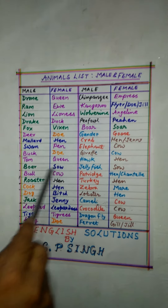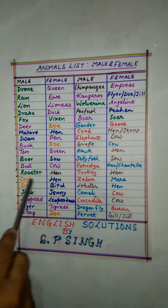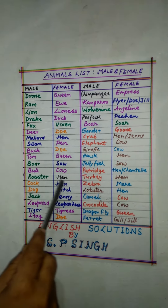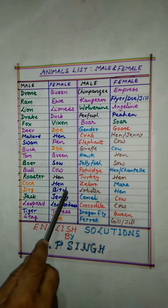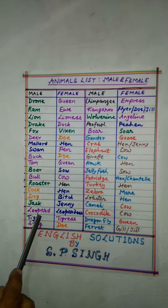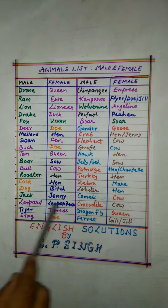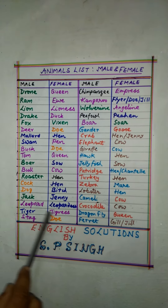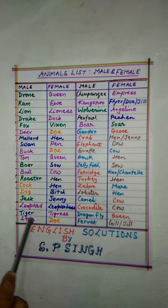Bull — cow. Rooster — hen. Cock — hen. Dog — bitch. Jack — jenny. Leopard — leopard. Tiger — tigress. Stag — doe.